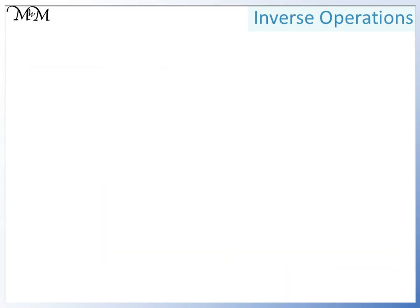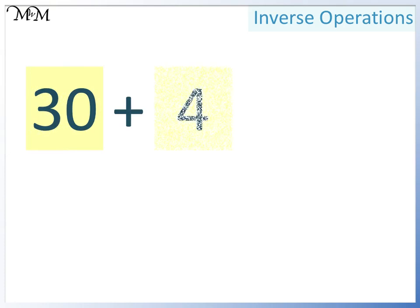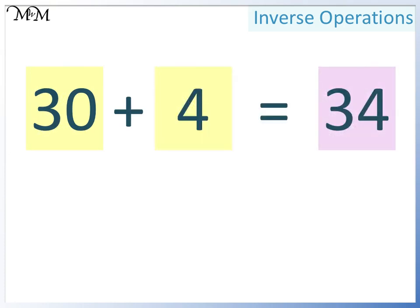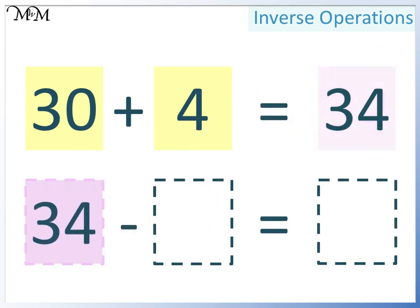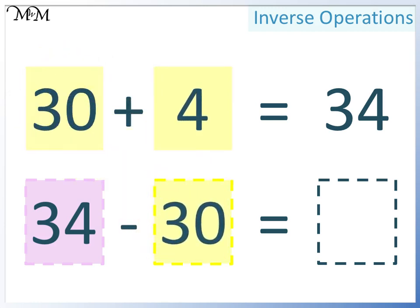In our final example, we have 30 plus 4 equals 34. Two smaller numbers add to make a larger number. To change this into a subtraction, the first number must be the largest. The largest number is 34. In the next space, we can have either of the two smaller numbers. We'll put 30 in this space. Finally, we can move the 4 into the last space. 34 take away 30 equals 4.